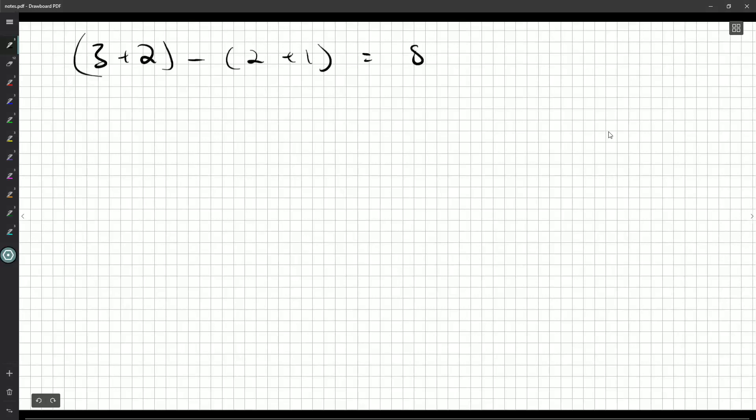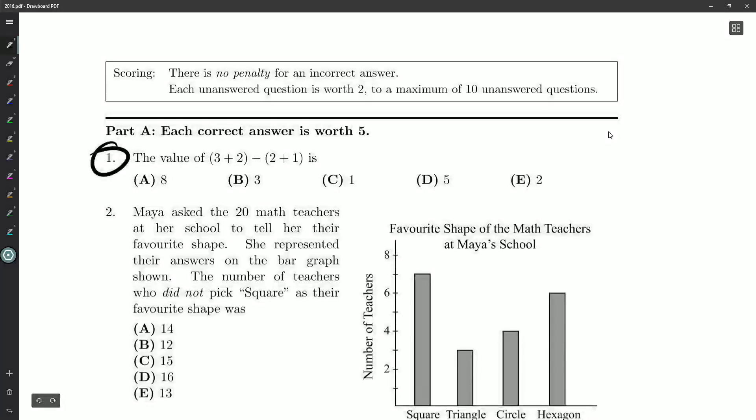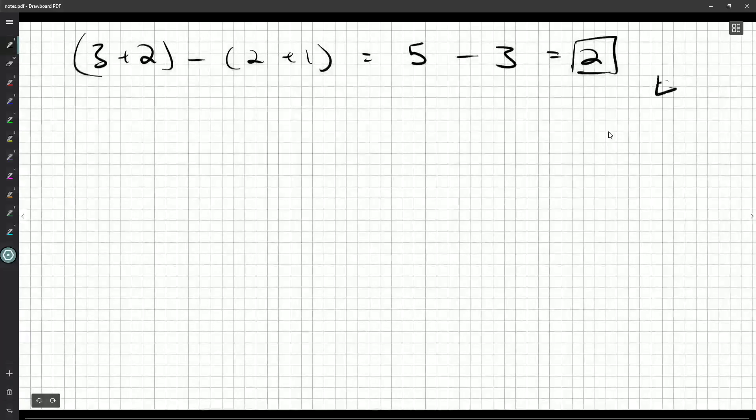Do everything in the brackets first, and then 5 minus 3 is 2. I'll make my 5 look more like a 5 and less like a 6. There we go, and 2 is at the end there—it's E. So our very first answer to this contest is E, and that answers question number one.